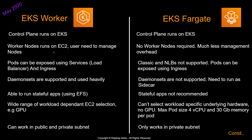For EKS worker nodes, worker nodes run on EC2 and the user needs to manage them. For EKS Fargate, no worker nodes are required — much less management overhead. For regular EKS worker, pods can be exposed using services such as load balancer, node port, and ingress. For EKS Fargate, classic and network load balancers are not supported — pods can only be exposed using ingress. DaemonSets are used heavily in regular EKS but are not supported in Fargate.